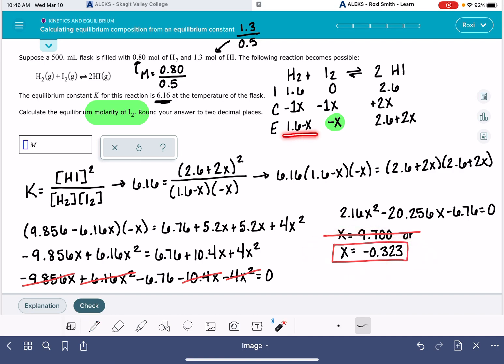We can plug this X value into any one of these terms to get the concentration of anything at equilibrium. This problem is specifically asking us about I2. So that means we want to solve only for I2. I2 is negative X. And our X value is negative 0.323 to two significant figures. That gives us an answer of 0.32 molar.